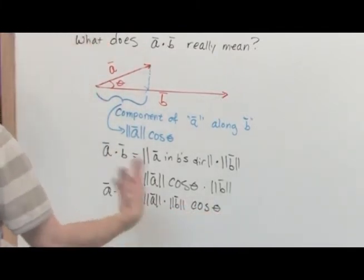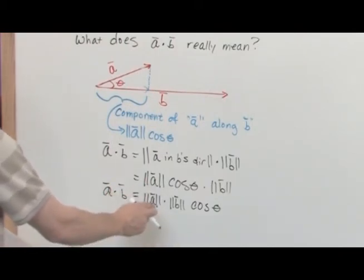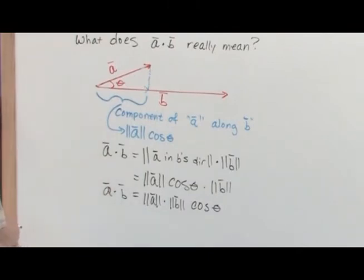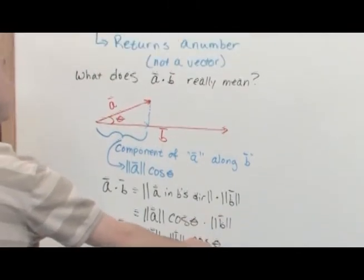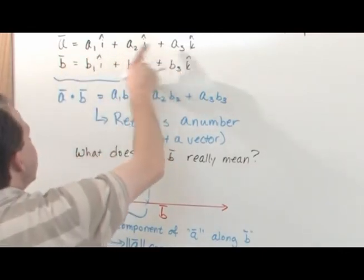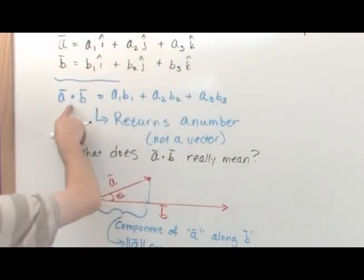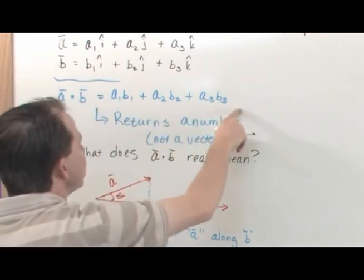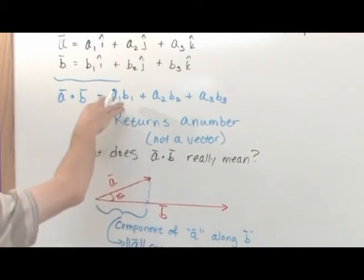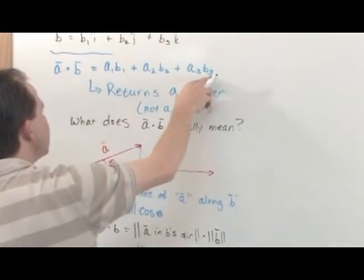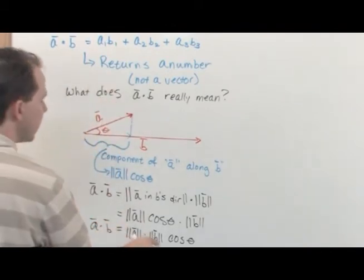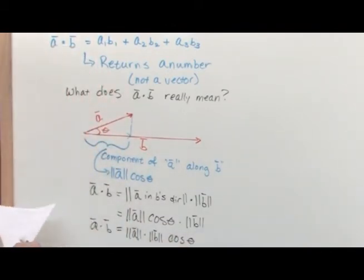Use the form |a||b|cosθ when you know the lengths of a and b and the angle between them. But what if you don't know the angle? What if all you know are the components of a and b? Then this component form — a₁b₁ + a₂b₂ + a₃b₃ — gives you the exact same number back as if you had calculated the lengths and the angle and multiplied them together.